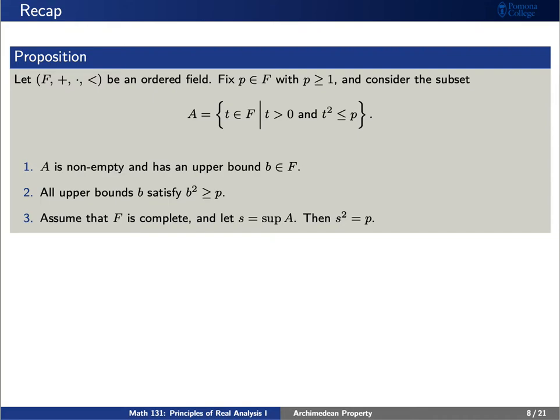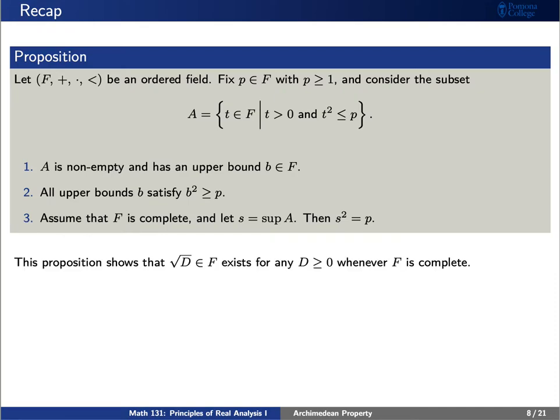First, this set is non-empty and has an upper bound b. In fact, all other upper bounds b satisfy b squared is greater than or equal to p. Finally, if we assume moreover that f is a complete ordered field, then its least upper bound s satisfies s squared is equal to p. This allows us to define the square root of any number d in our complete ordered field f, as long as d is greater than or equal to 0.